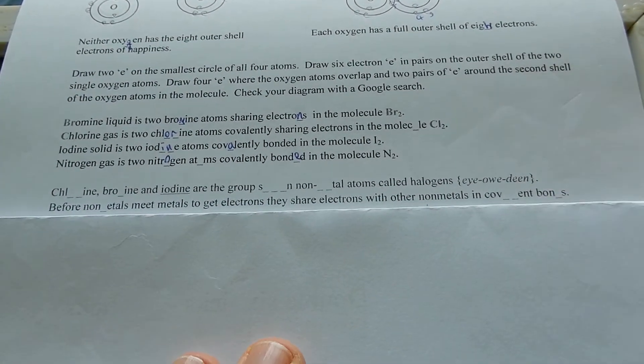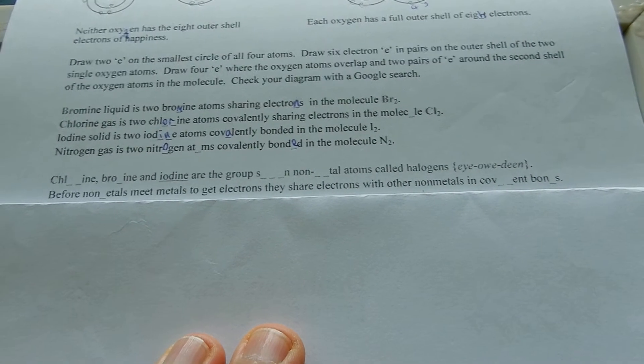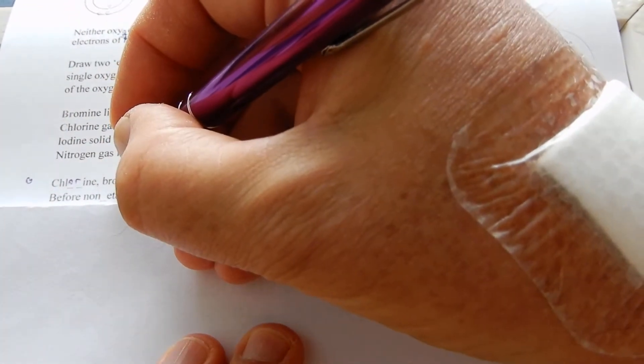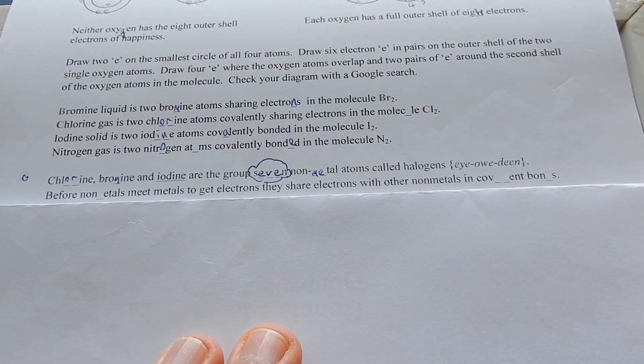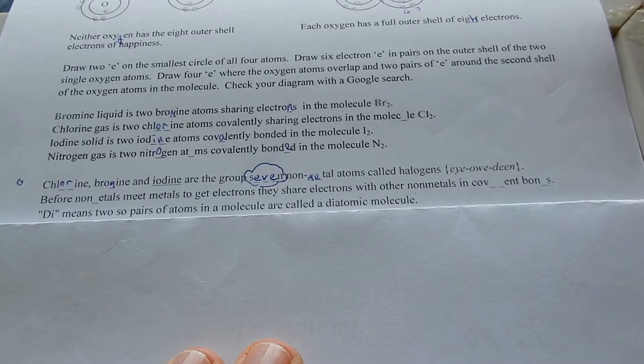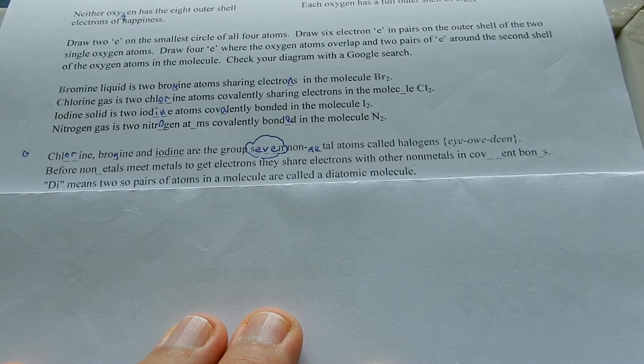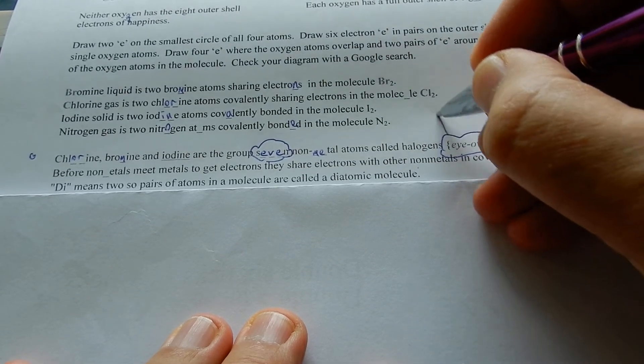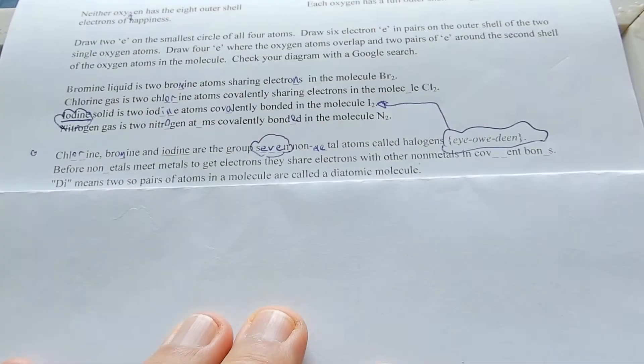Chlorine, bromine and iodine are group seven non-metals called halogens.